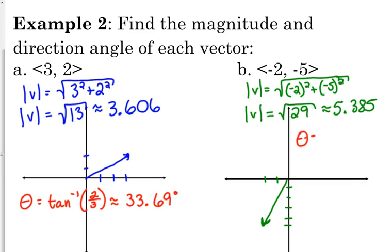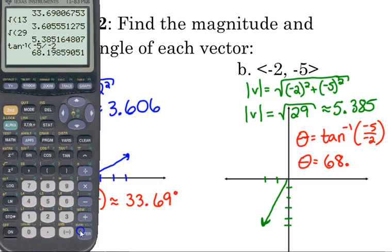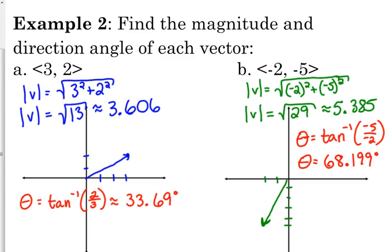And let's find theta. So, theta is equal to the inverse tangent of y over x. Inverse tangent of negative 5 over negative 2. The negatives do matter here. 68.199. Now, is that correct? No. Why not? Because it's going off of the other, it's going off of the negative thing. Right?